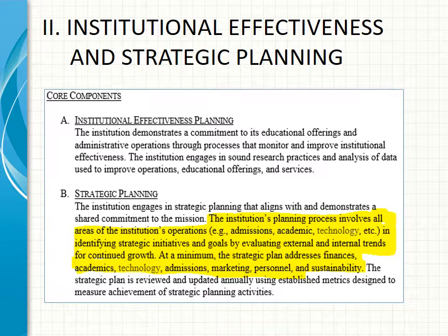The first section where technology is addressed in DEAC's accreditation standards is Section 2, Institutional Effectiveness and Strategic Planning. The second core component is strategic planning, which specifies that the institution's planning process involves all areas of operations — including technology — in identifying strategic initiatives and goals by evaluating external and internal trends for continued growth. At a minimum, the strategic plan must address finances, academics, technology, admissions, marketing, training, personnel, and sustainability.